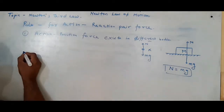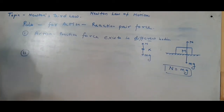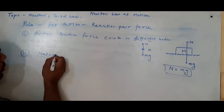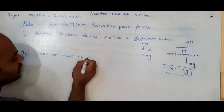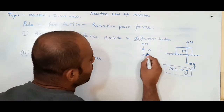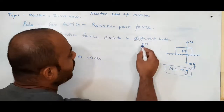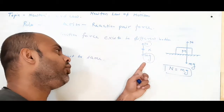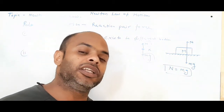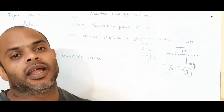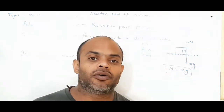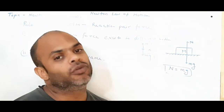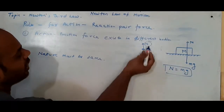The second rule is: the nature of the action-reaction pair must be the same. Here the nature is gravitational force, and there the nature is normal reaction — they are different. A gravitational force can only have a gravitational force as its reaction. A normal reaction's reaction must also be a normal reaction. Similarly, a magnetic force's reaction will also be a magnetic force. So the nature of the force must be the same. Here we have gravity on one side and normal reaction on the other — they are different.